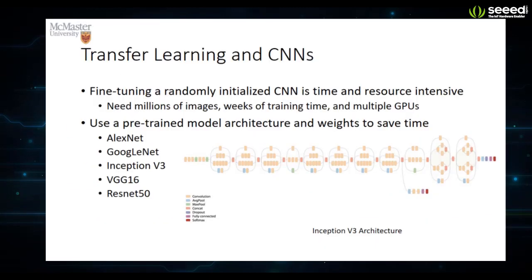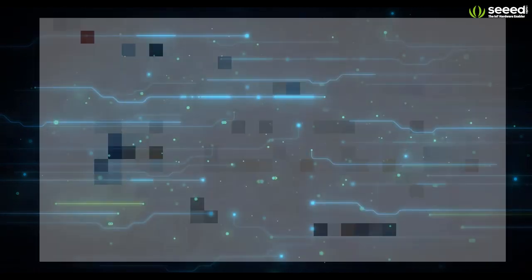You need significantly much less training data and compute time with transfer learning, since you're only training last few layers of the network, composed maybe of a few hundred neurons.